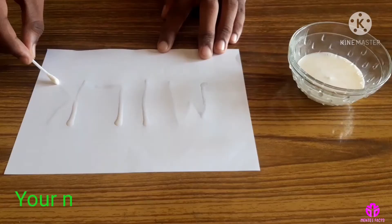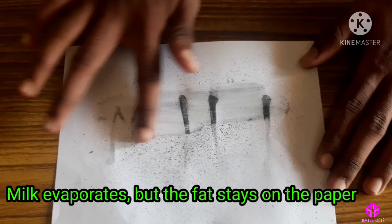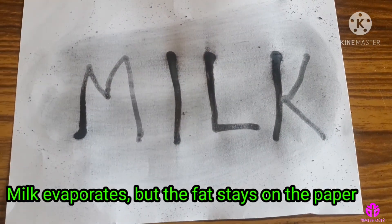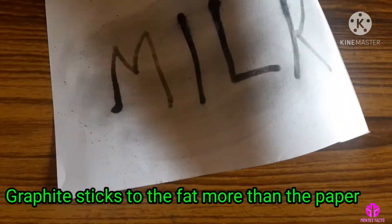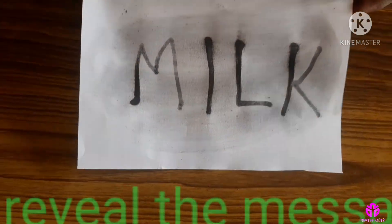How it works: When your message dries on the paper, most of the milk evaporates but the fat stays on the paper. Graphite sticks to the fat more than the paper to reveal the message.